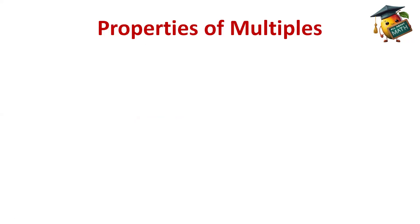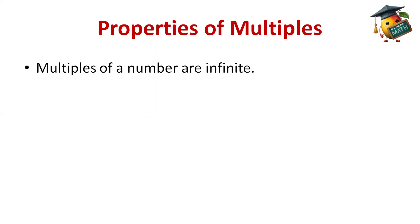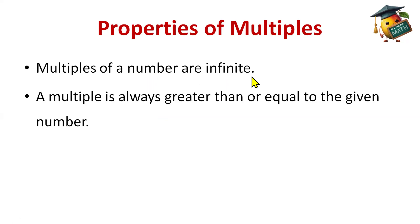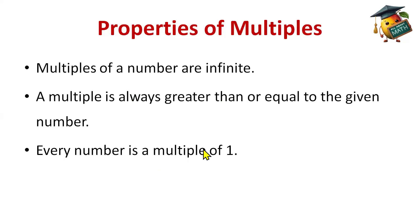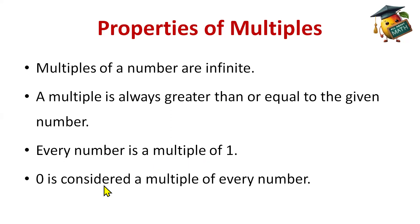Now the properties of multiples. First: multiples of a number are infinite — we can write the table of 7 till infinity. Second: a multiple is always greater than or equal to the given number — we always start the multiple with the same number and it increases every step. Third: every number is a multiple of 1. Fourth: 0 is considered a multiple of every number.